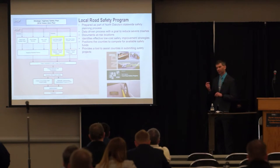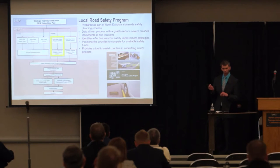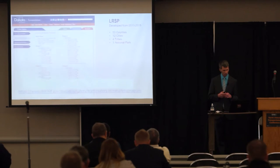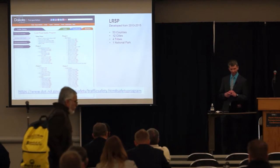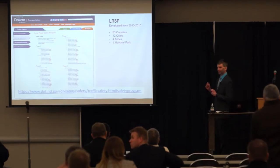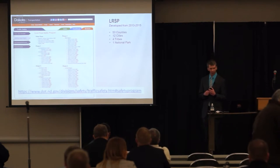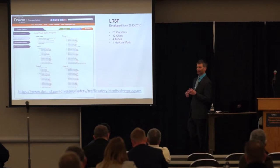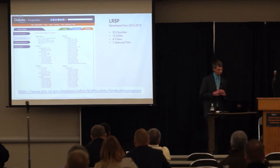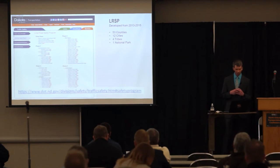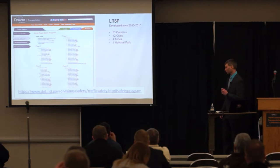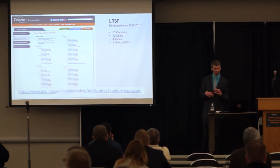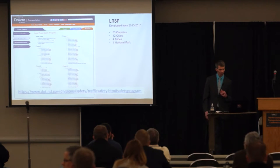The local road safety plans also positioned counties to submit projects and compete for available HSIP or safety funds. In 2013 and 2015, we completed LRSPs for all 53 counties, 12 major cities, 4 tribes, and 1 national park. This website shows all those plans through a link at the bottom. You can also Google 'North Dakota DOT local road safety plans' to find them.